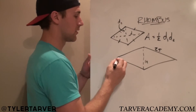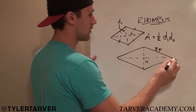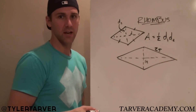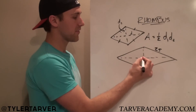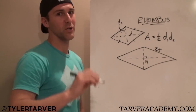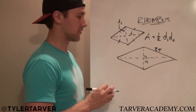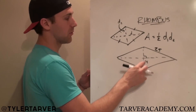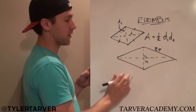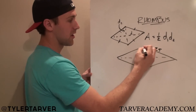Guess what? We're gonna turn it into four right triangles, because whenever those diagonals cross, they make right angles. We can work with that. If that diagonal is 14, we just cut it in half — therefore that side is 7.